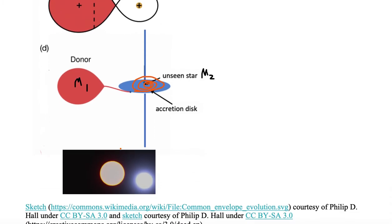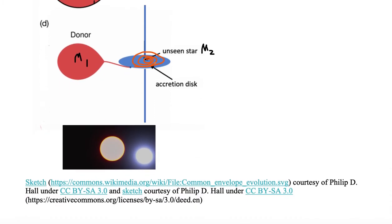Eventually, enough mass will be transferred from M1 to M2 to end up with a case where M1 becomes less massive than M2. And when that happens, we have what's called an Algol system.